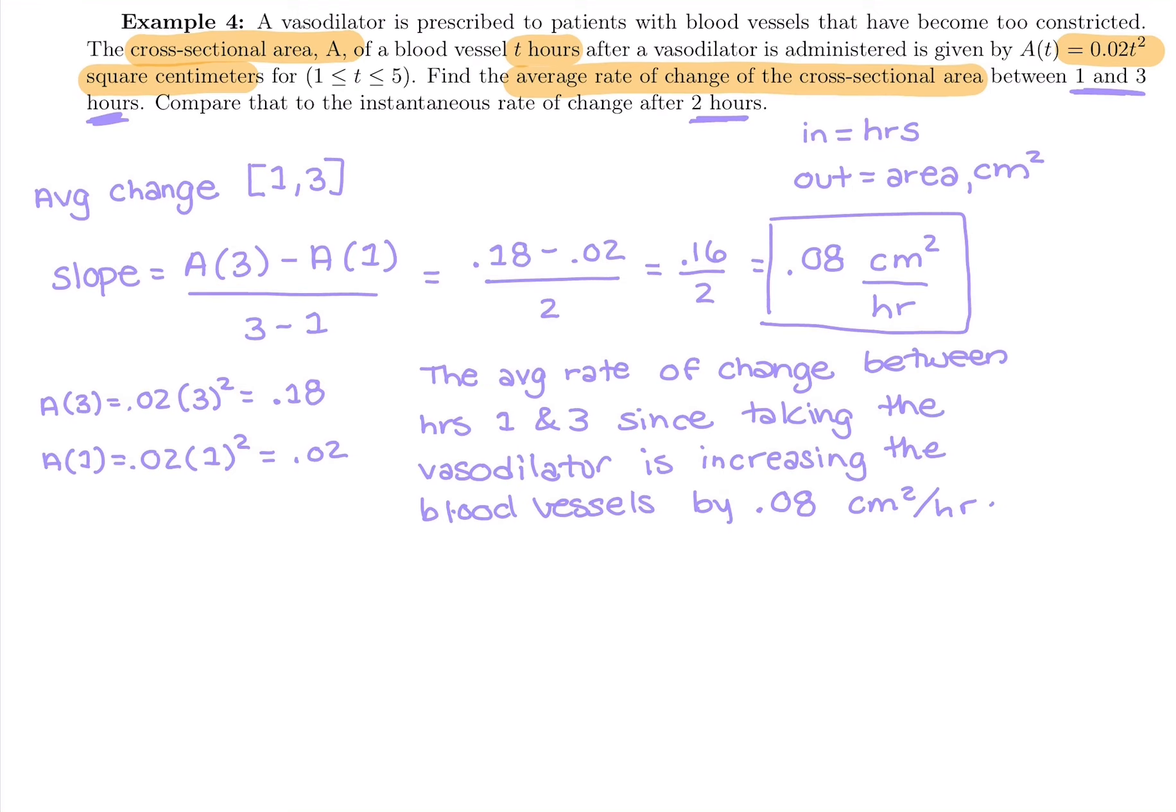The next part says compare that to the instantaneous rate of change after two hours. So whenever we see instantaneous rate of change, we are thinking derivative, which is actually faster. So I'm happy to do instant change. So our derivative is instant change or slope of a tangent line would be another way to call the derivative. So we're going to take a prime of t and we can plug in any hour t to see how the vasodilator is working.